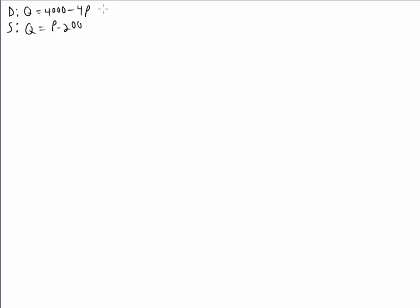If we want to graph these, however, we'll have to solve for P. So for demand, I just move this over to the other side, so we have 4P, and then I subtract Q from both sides, and then we're going to have to divide by 4, so we're going to get P equals 4000 minus Q all over 4, and I could say that equals 1000 minus one-fourth Q.